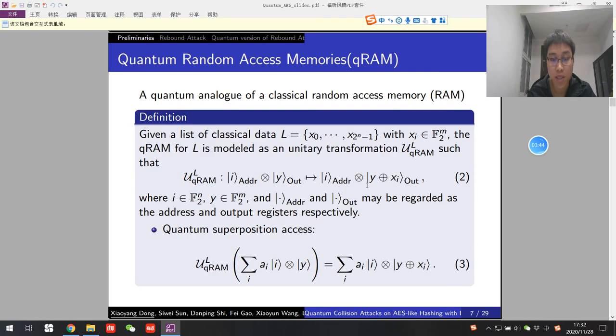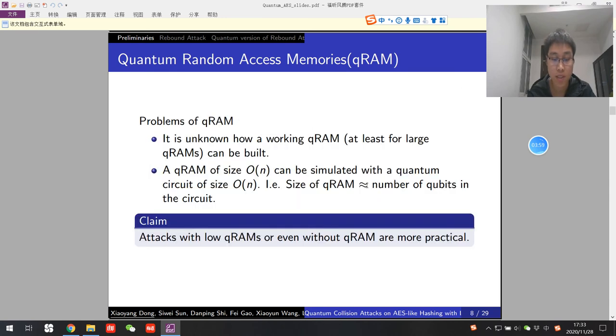Quantum random access memory is the quantum analog of classical random access memory. It can pick out the superposition states from the superposition addresses. However, it is unknown how QRAM is built. A QRAM of size n can be simulated by n qubits. Hence, QRAM is very expensive and attacks with low QRAM are more practical.